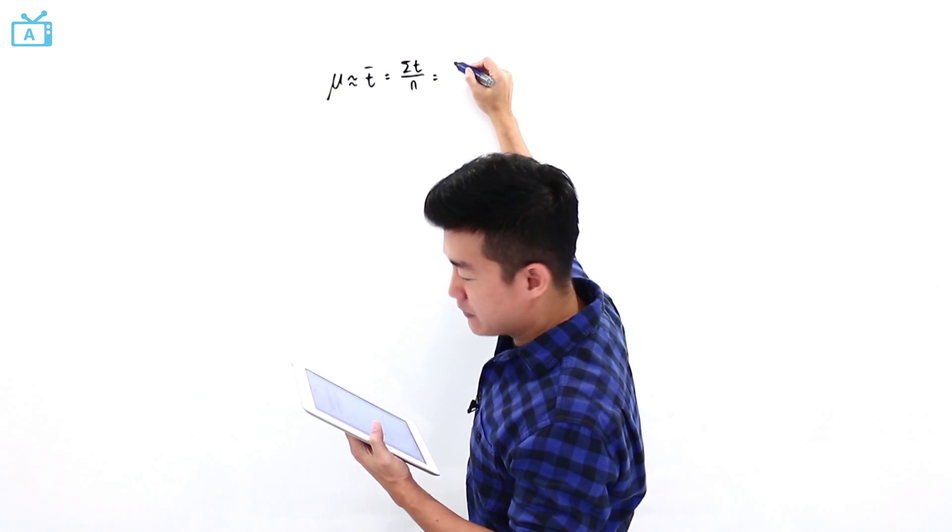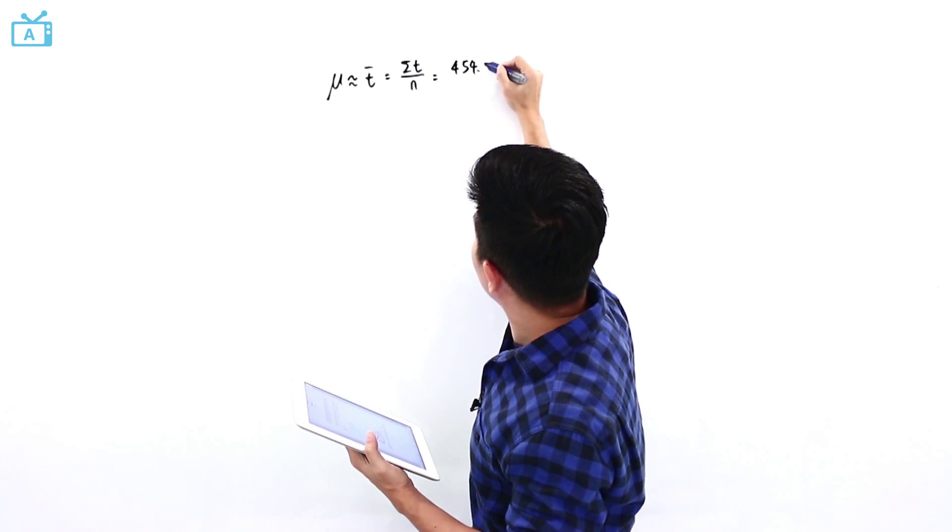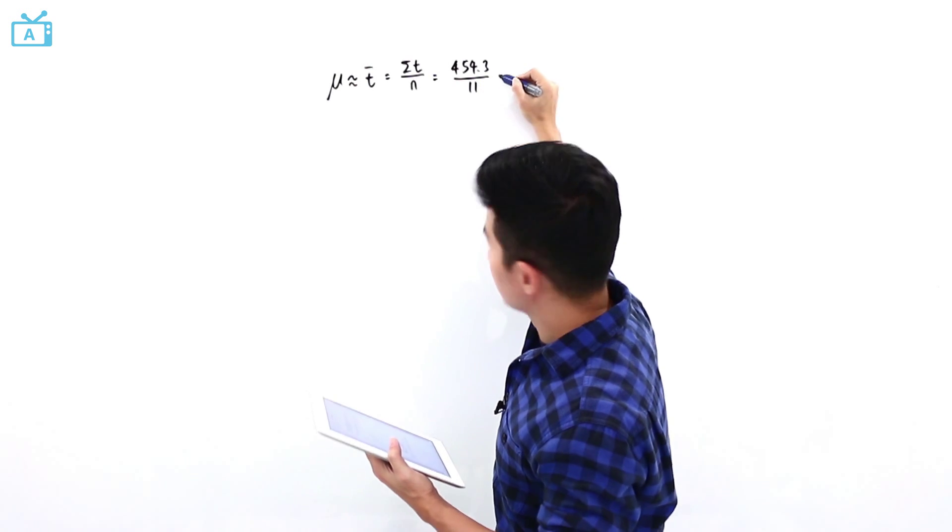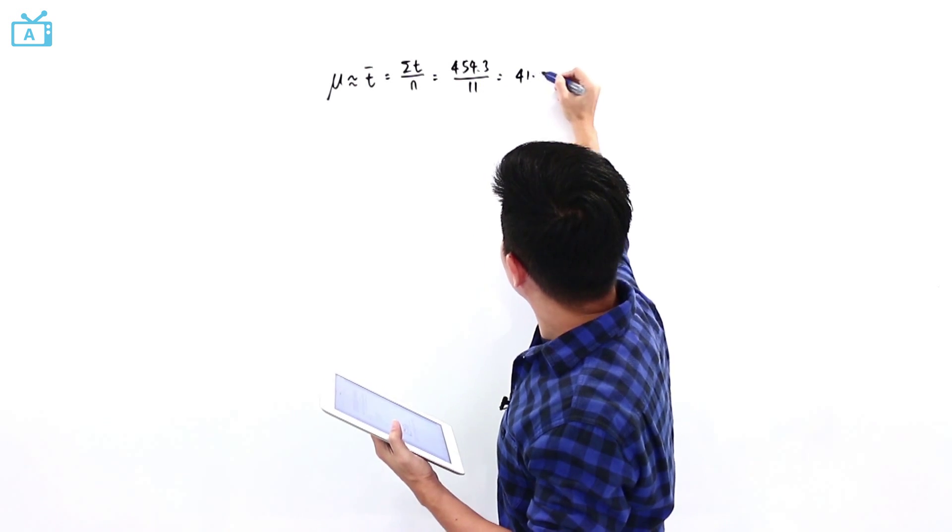And this summation of t is given to us as 454.3, and n is given to us by the question as 11. So this is 41.3.